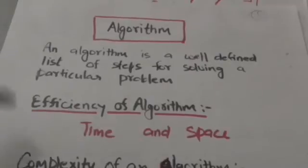The time and space used by an algorithm are the two main measures of the efficiency of algorithms. Time is measured by counting the number of basic operations performed by the algorithm, and space is measured by counting the maximum memory needed by the algorithm.